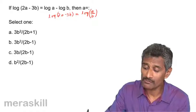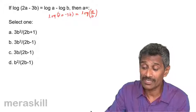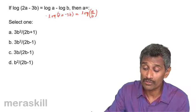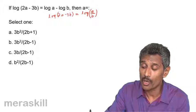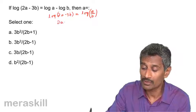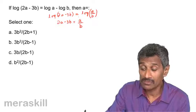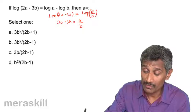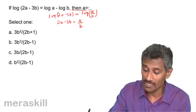Since log of one number equals log of another number, the numbers themselves are equal — provided there is no coefficient in front. So 2a minus 3b equals a/b. Here you need to find the value of a in terms of b, so simplify this equation.